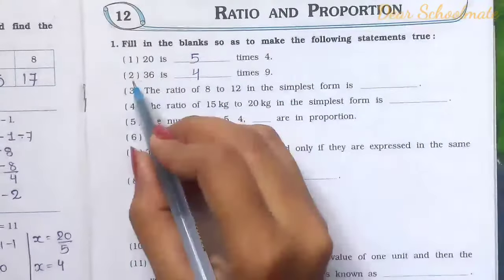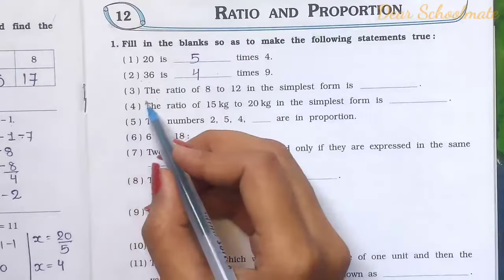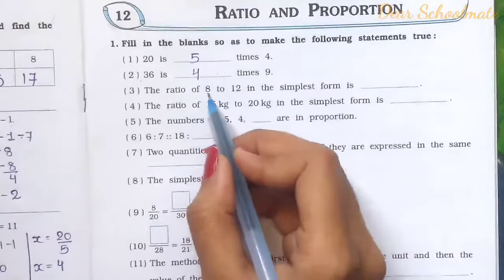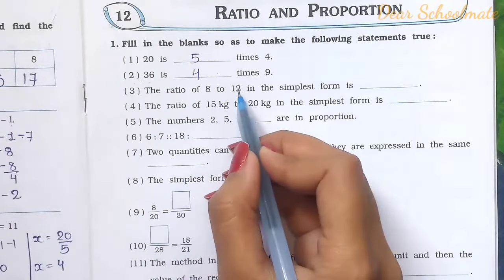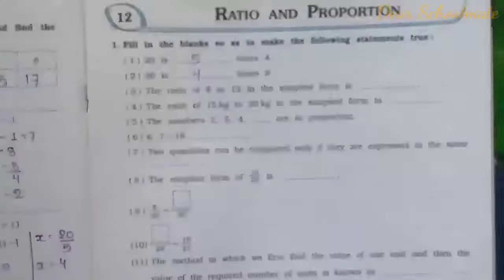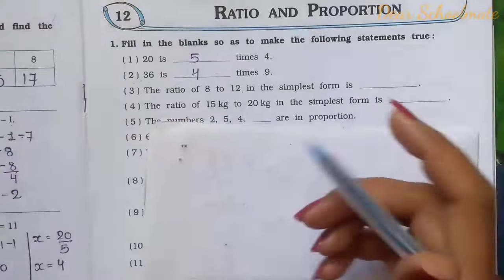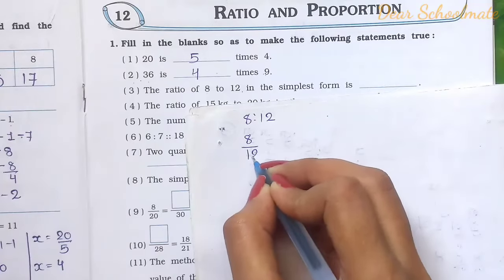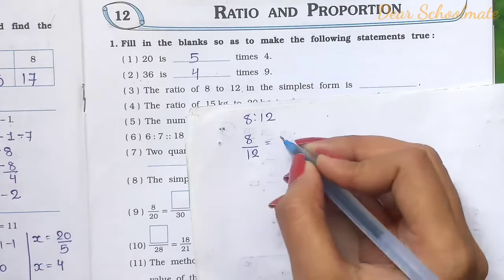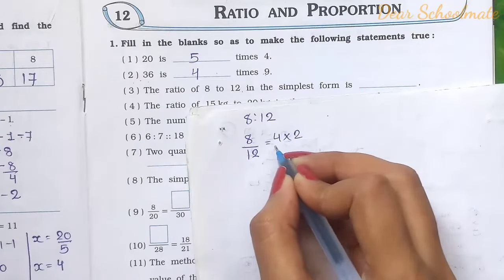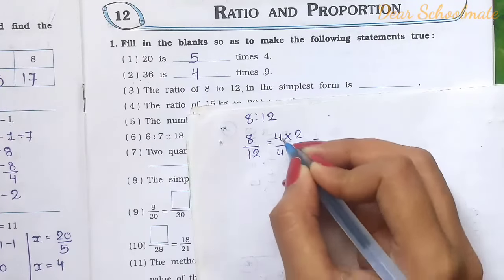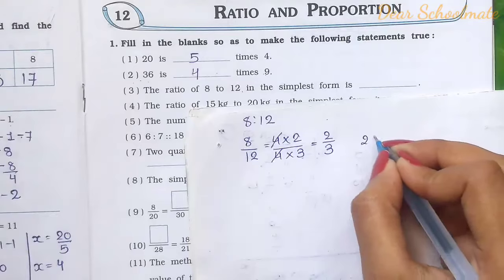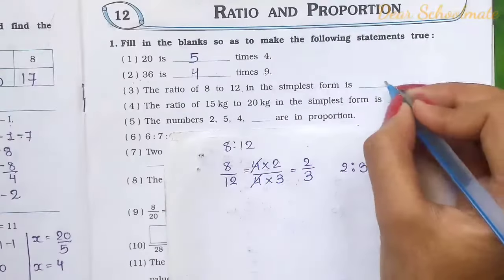Number 3: The ratio of 8 to 12 in the simplest form is dash. We write 8 is to 12 as the fraction 8 by 12. Now we cancel: 8 divided by 4 is 2, and 12 divided by 4 is 3. So the simplest form is 2 is to 3.